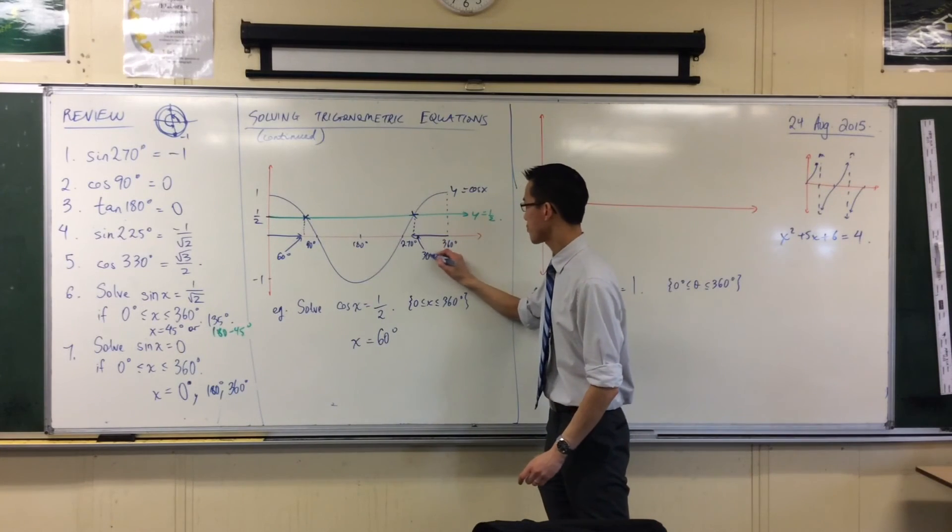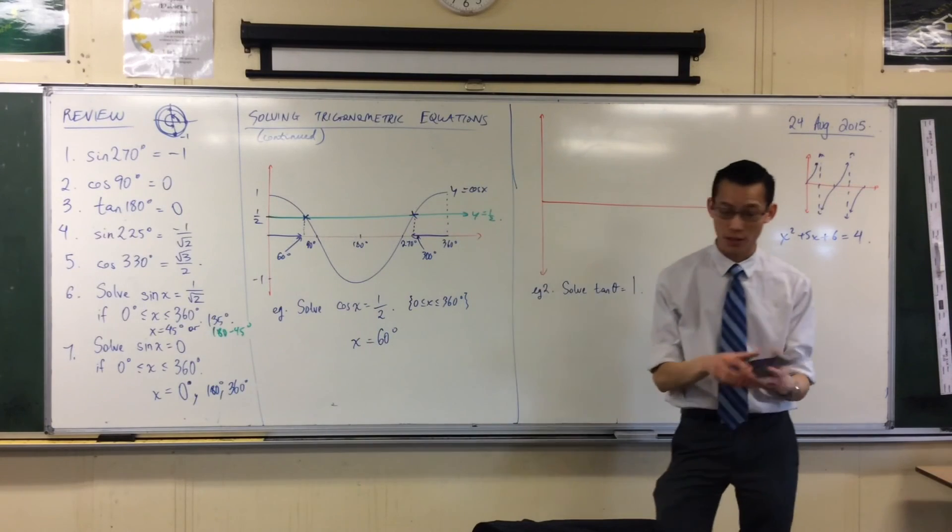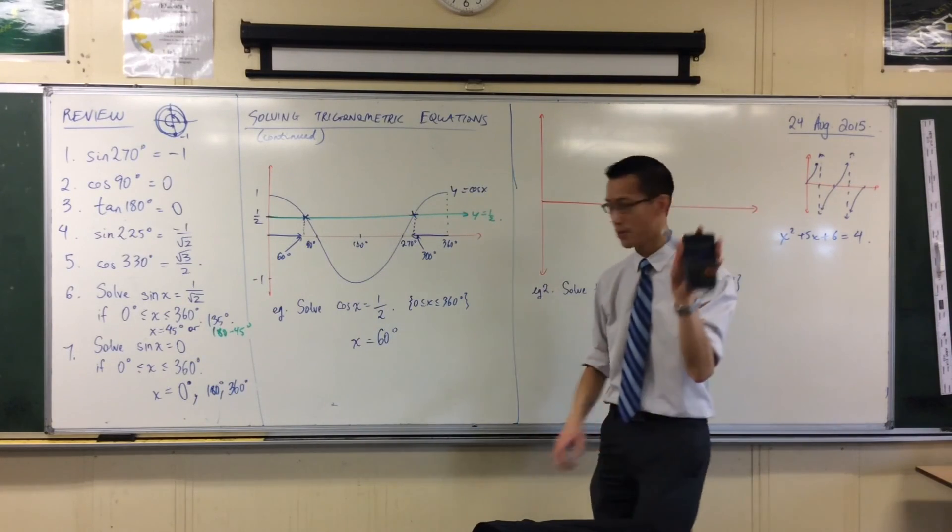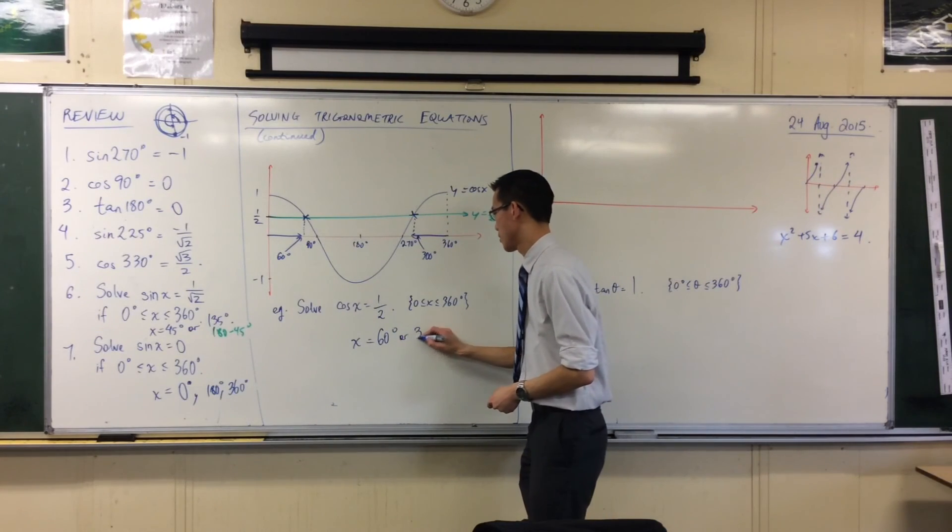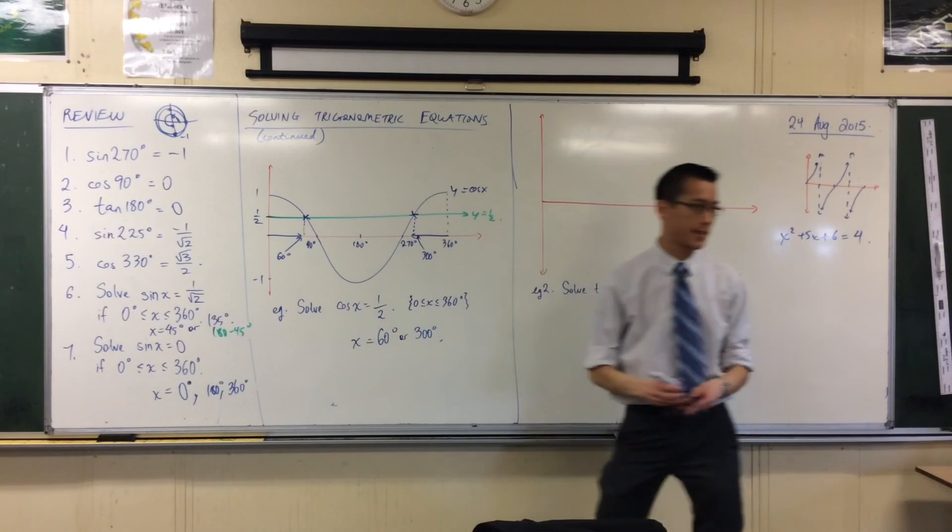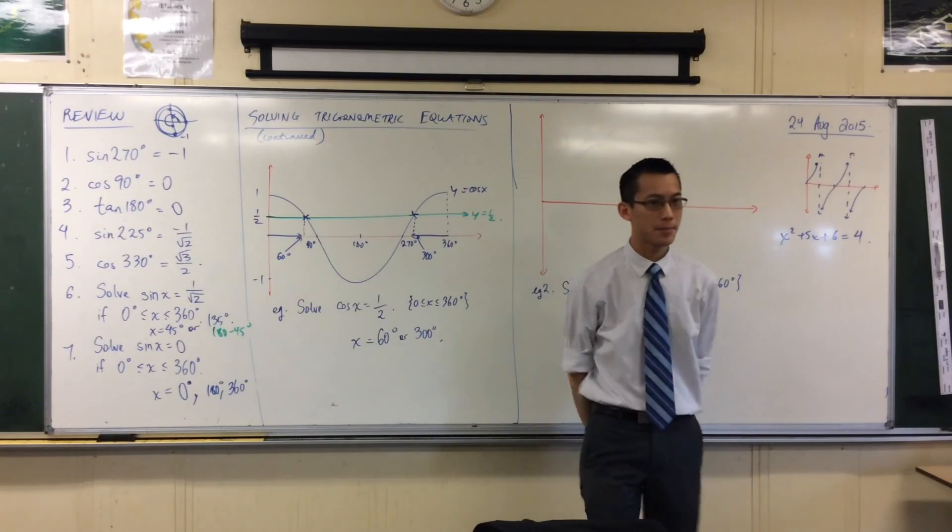And of course, if we're correct, you can grab your calculator and you can put in cos 300, and surprise, surprise, you get 1 over 2. So here is my second answer. And I can see from my graph, I haven't missed any. 1, 2 points of intersection, that's it.